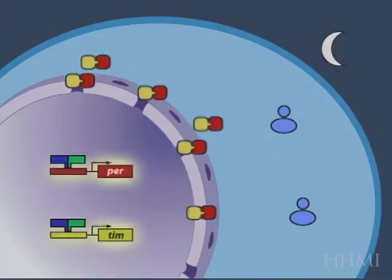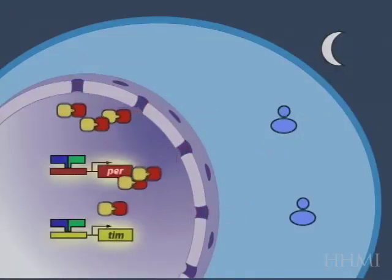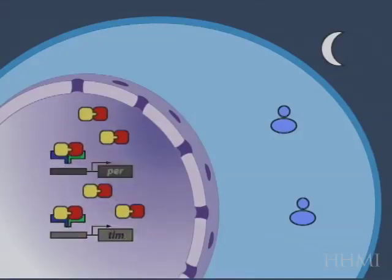And so, the heterodimers now move into the nucleus, so the form of PER that moves into the nucleus is a heterodimer, and it's the heterodimers which interact with CLOCK and CYCLE, and extinguish transcription.